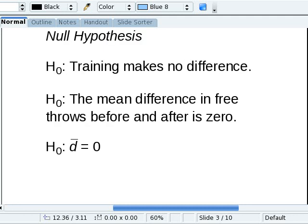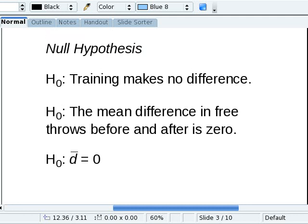The null hypothesis, which is the one that we use for doing statistical tests, H₀, says training makes no difference. There should be no difference in the means between the before and after. In other words, the average of all of our differences should come out to zero.